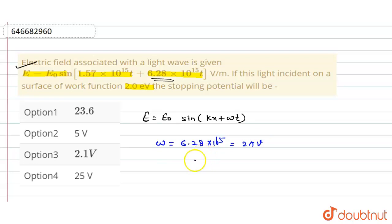So we can write the value of ν. ν can be written as 6.28 × 10¹⁵ divided by 2π.